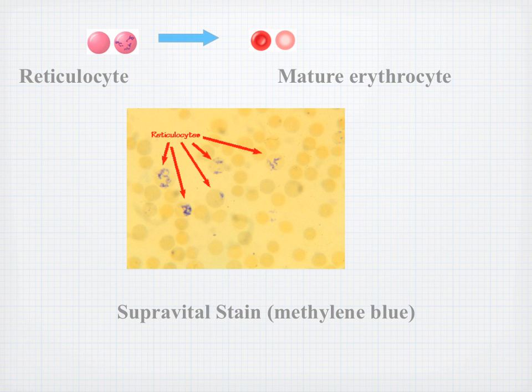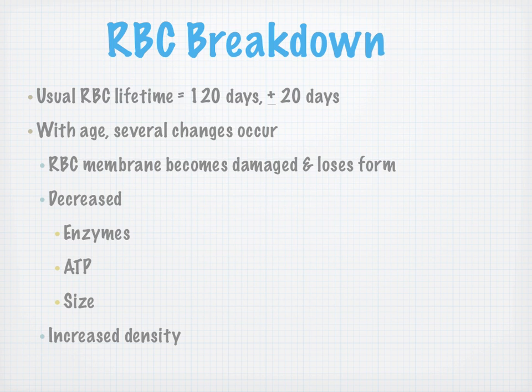On the next slide, we have the reticulocyte that turns into a mature erythrocyte. You can see a super vital stain — methylene blue — of the reticulocyte, and you can see that ribosomal package still present.